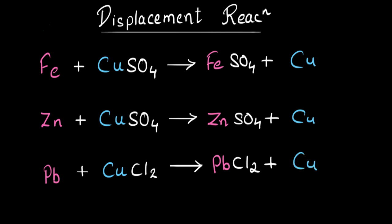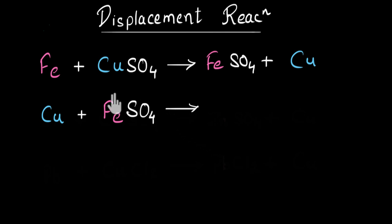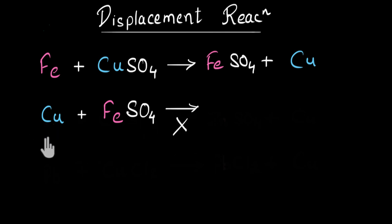Now let's look at a slightly different problem: copper in iron sulfate solution. What will happen? We have seen that iron is more reactive than copper, meaning copper is less reactive than iron. Copper cannot displace iron from its sulfate — this reaction cannot proceed. It will not happen. We will simply have iron sulfate and copper remaining.